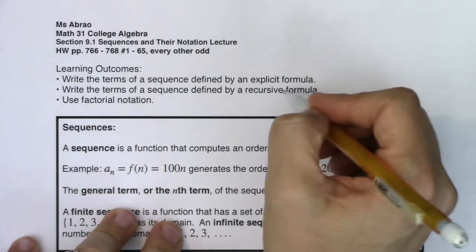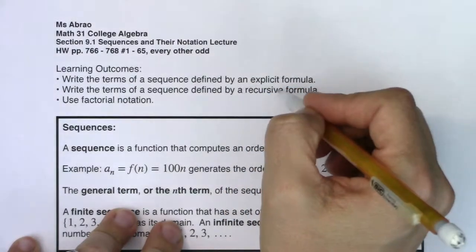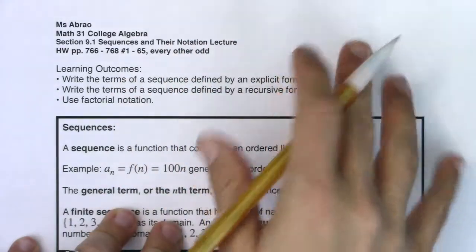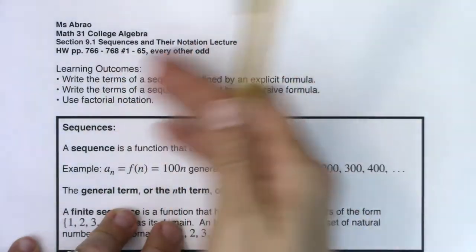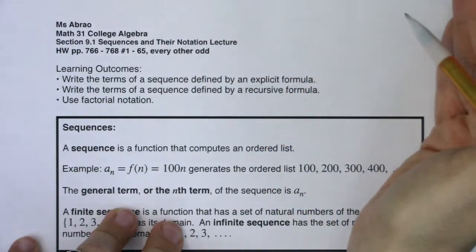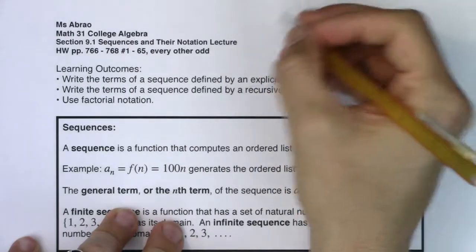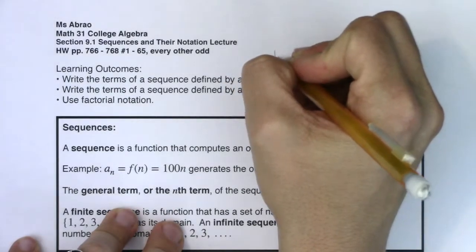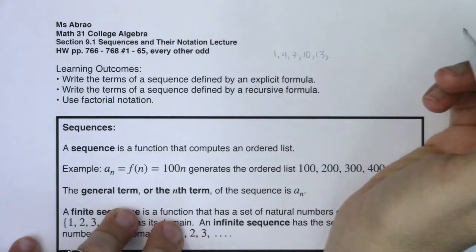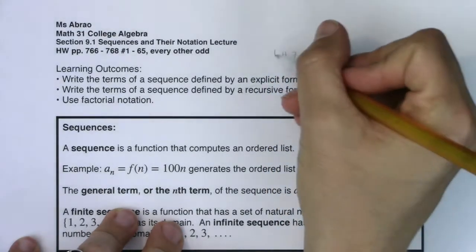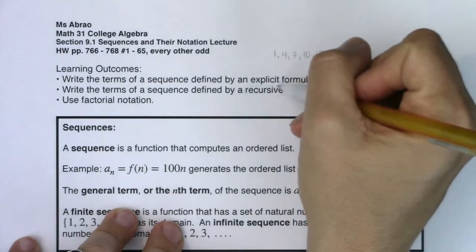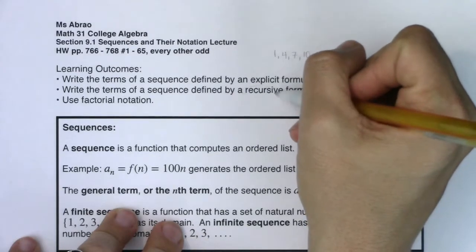These will both have formulas, but when we say recursive, we'll define this formula in terms of the term that came before it. When we make these sequences, we're just going to make a list of numbers and look for patterns. You're going to see a list of numbers — for example: 1, 4, 7, 10, 13. This is a sequence: a list of numbers separated by commas. I haven't defined this sequence explicitly or recursively.